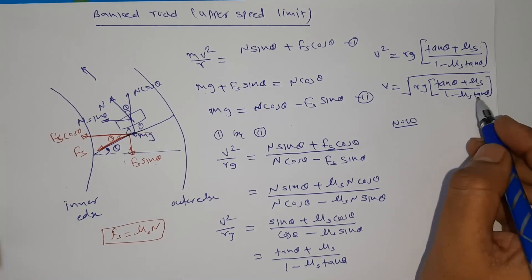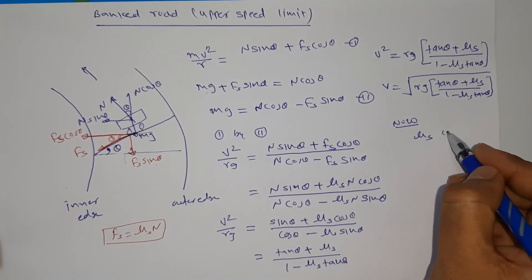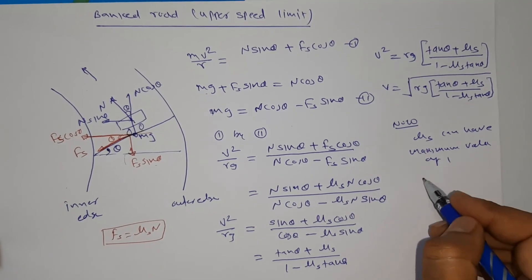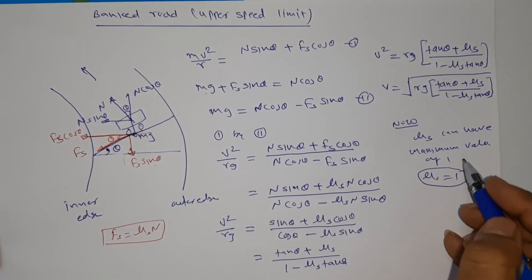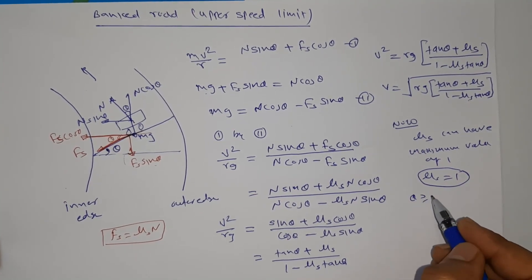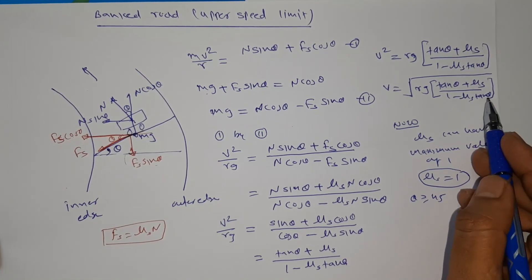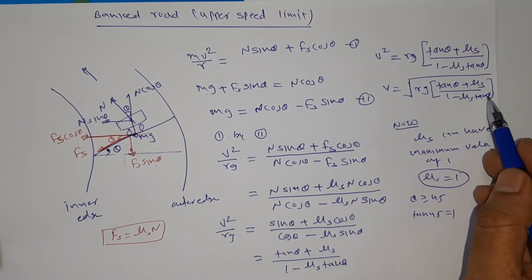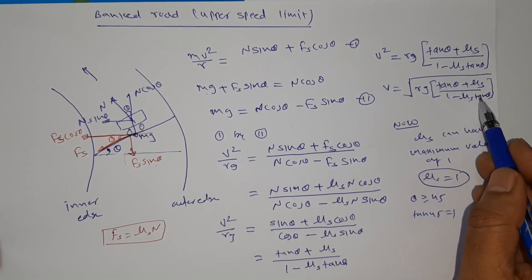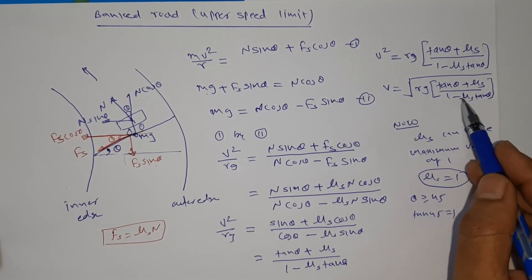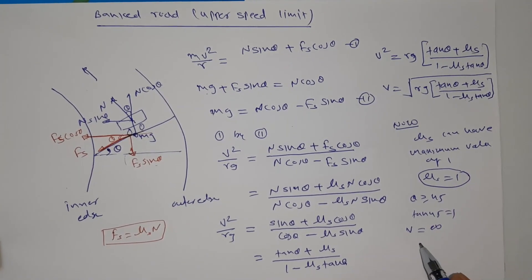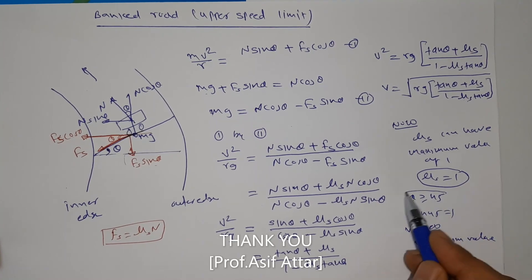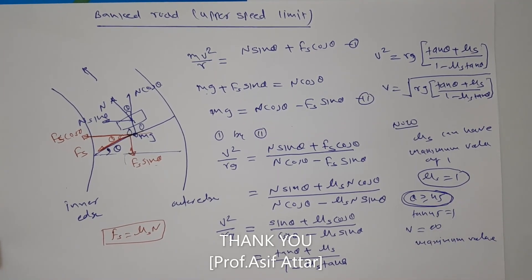The coefficient of static friction μₛ has a maximum value of 1. If θ ≥ 45°, then tanθ ≥ 1. Taking tan 45° = 1 and μₛ = 1: the denominator becomes 1 − 1×1 = 0, so v approaches infinity. This means when θ is equal to or greater than 45°, the vehicle has no upper speed limit on the banked road.